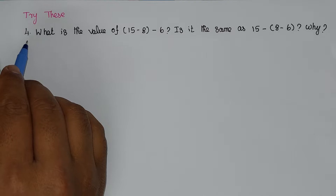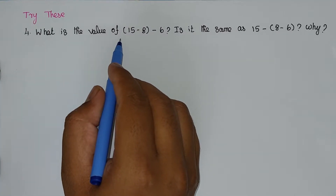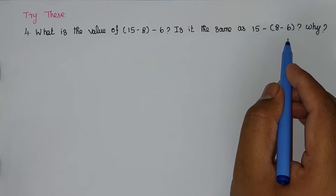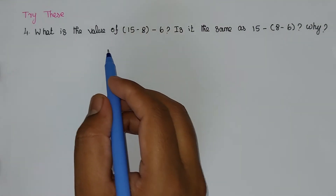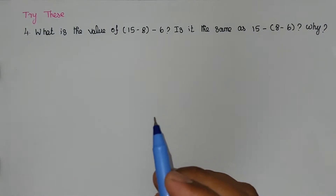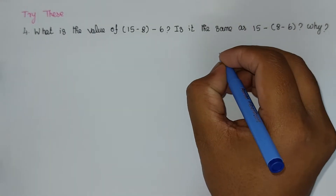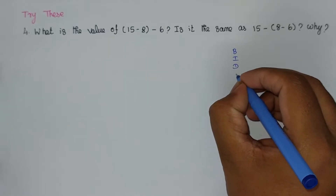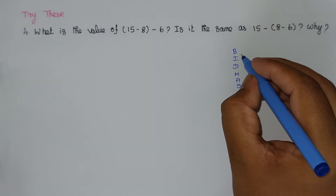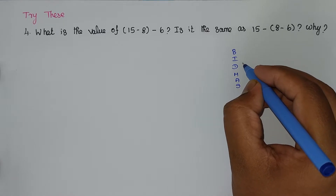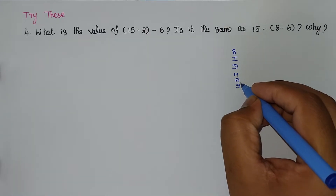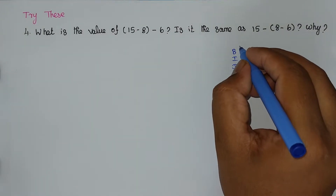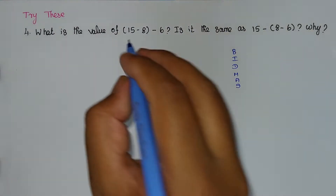Now we are going to see problem number 4. What is the value of 15 minus 8 minus 6? Is it the same as 15 minus (8 minus 6)? We are going to use the BODMAS rule, which we discussed in previous videos. B for Bracket, I for Indices, D for Division, M for Multiplication, A for Addition, S for Subtraction — in this order we will simplify the expression.